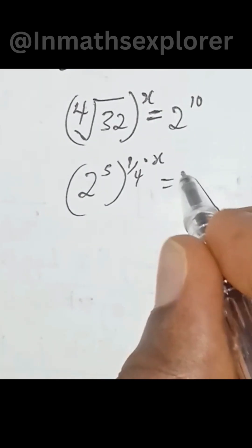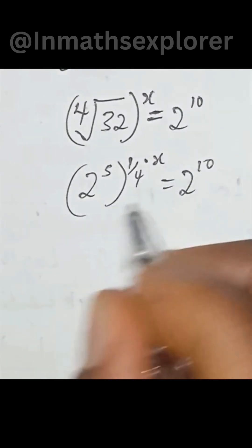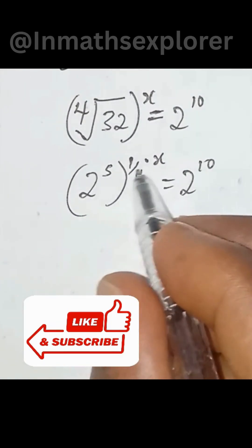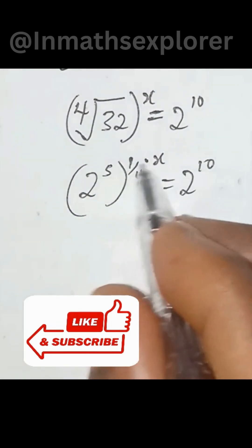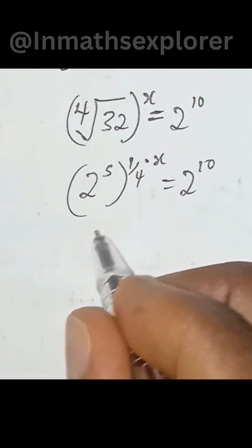Then multiply by x and that will be equal to 2 to the power of 10. So here we can multiply what we have at the exponent at the left hand side.